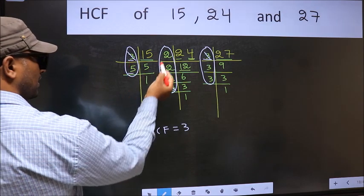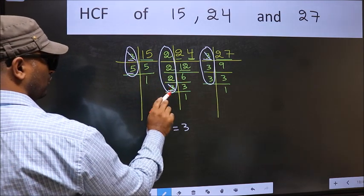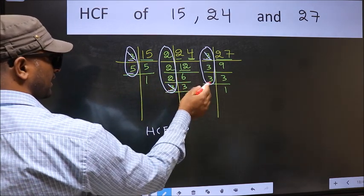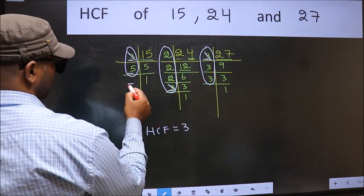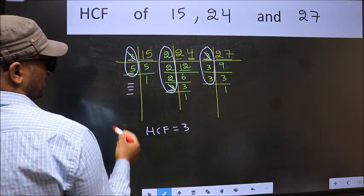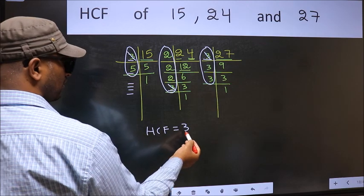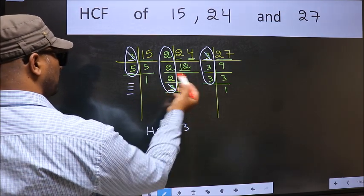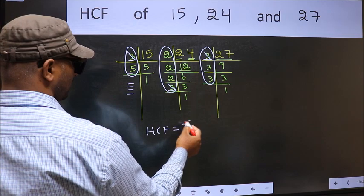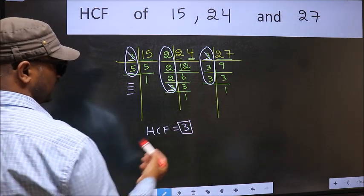Next number 5. Do we have 5 here? No. So no need for us to check in the other place. No more numbers have been left out. So we got only one number 3 present in all the 3 places. So 3 itself is our HCF.